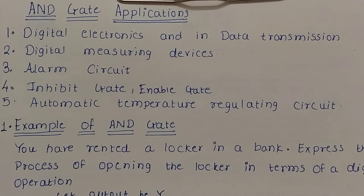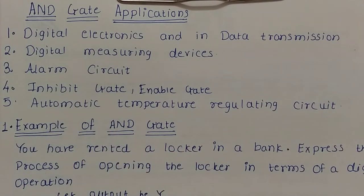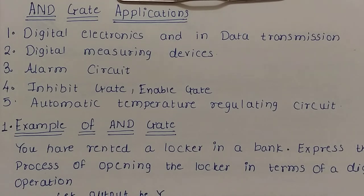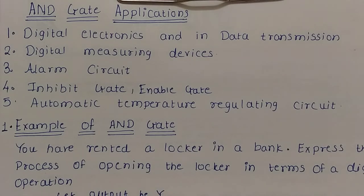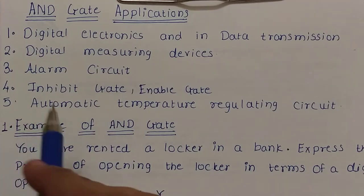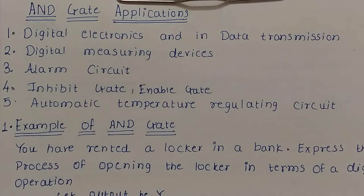Now we will see the AND gate applications. The first application is in digital electronics and data transmission, where the AND gate is used for allowing or not allowing data through a channel. The next application is in digital measuring devices. AND gates are also used in alarm systems. The fourth application is as an inhibit gate or enable gate — enable gate means allowing data through a channel, and inhibit gate means disabling it. Another application is in automatic temperature regulating circuits. AND gates are also used in counter circuits, among many more applications.